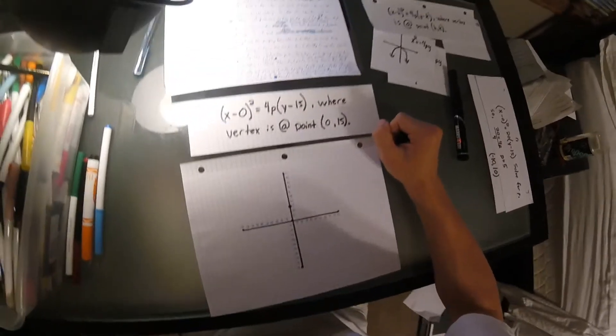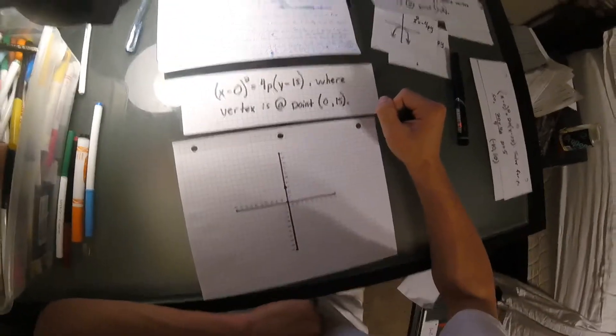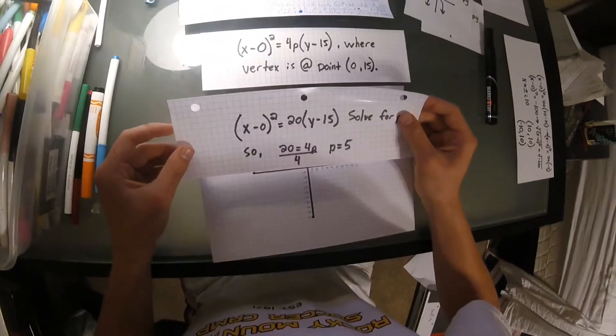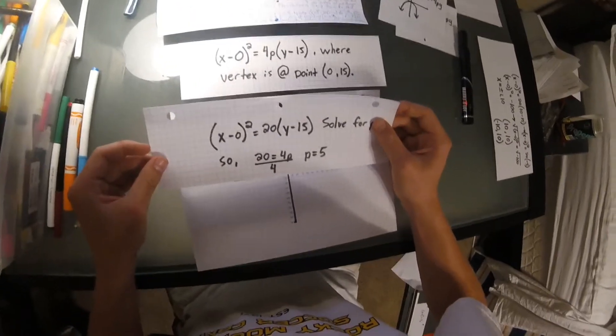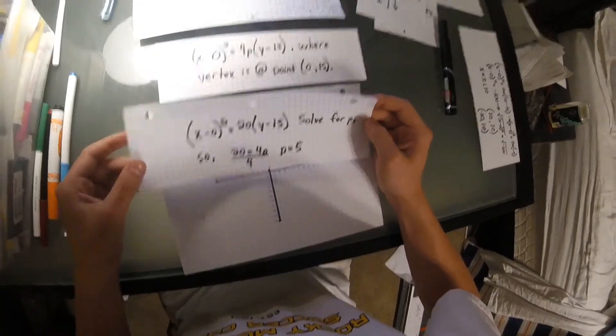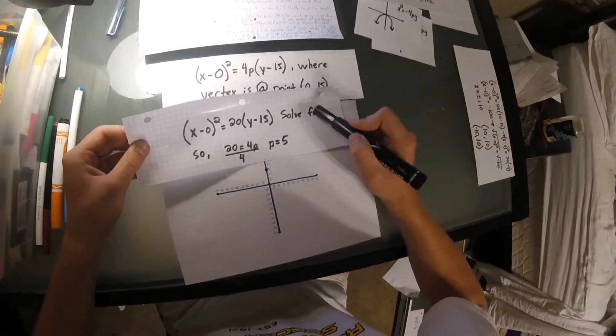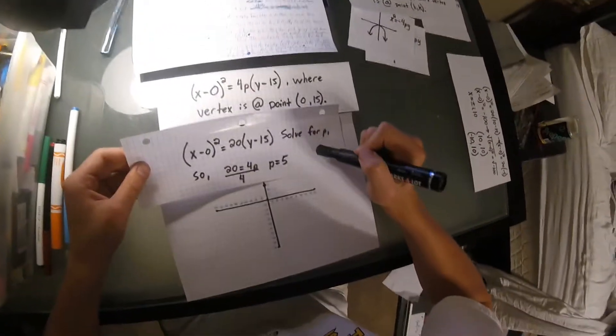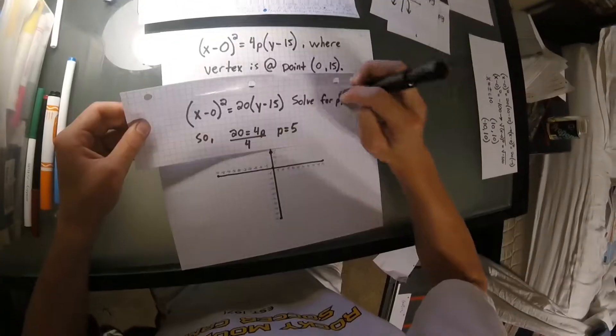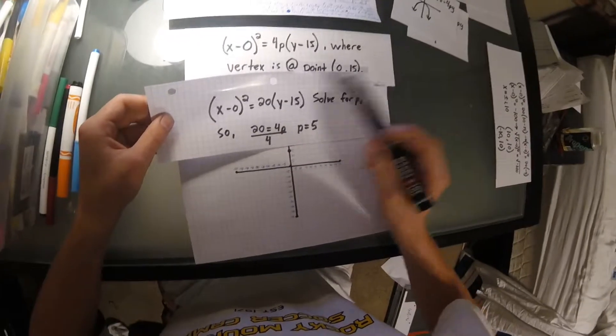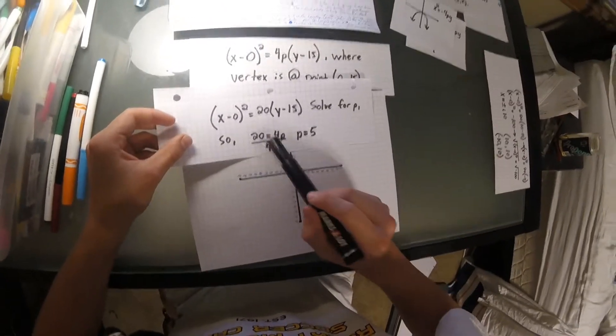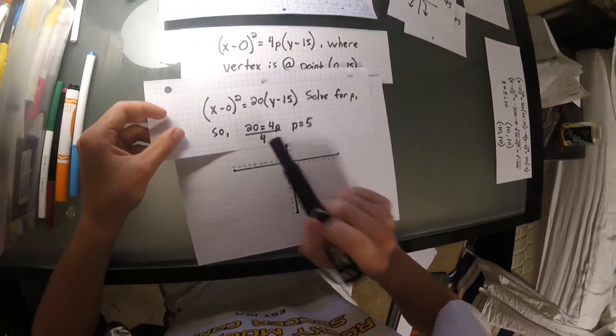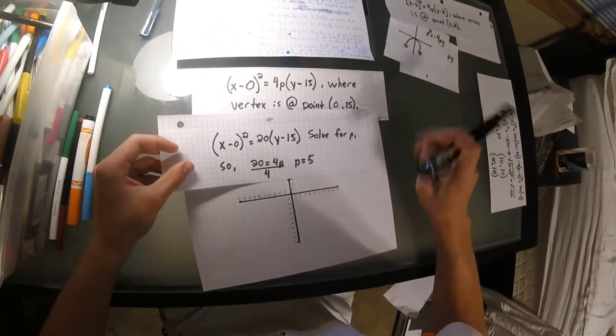After trying to figure this out for a very long time, I finally found the equation that worked. And that equation is x minus zero quantity squared is equal to 20 times y minus 15. Now, to find our focus and our directrix, we're going to solve for p. So, we're going to take 20 is equal to 4p, divide by 4, and we get that p is equal to 5.